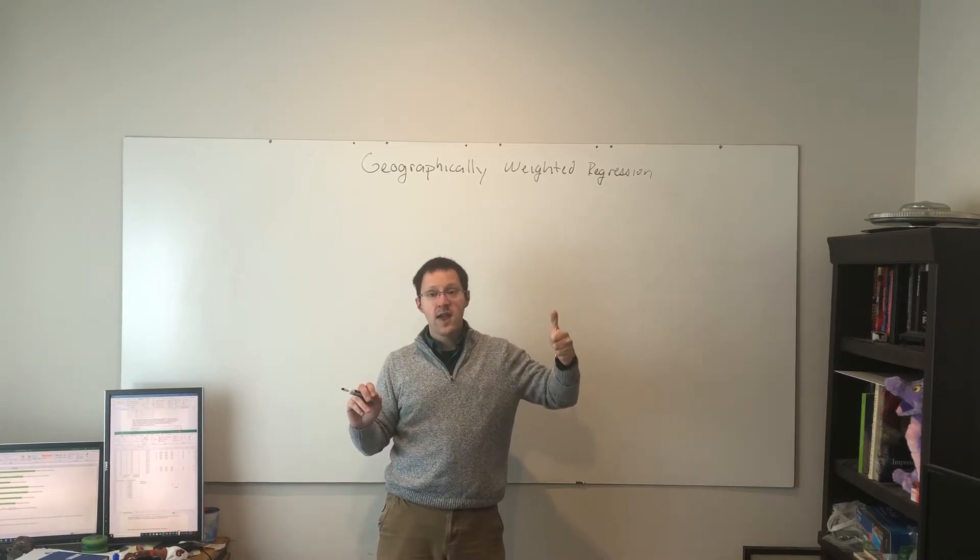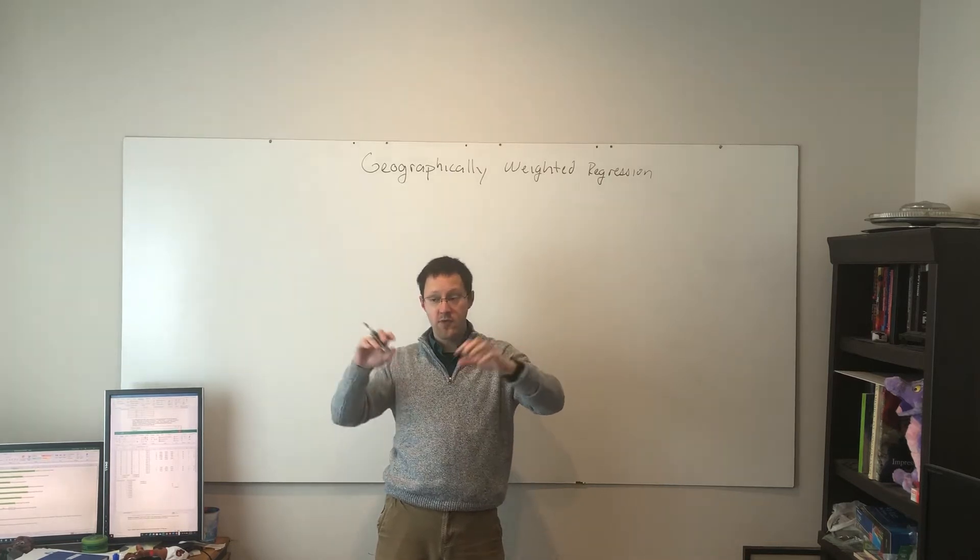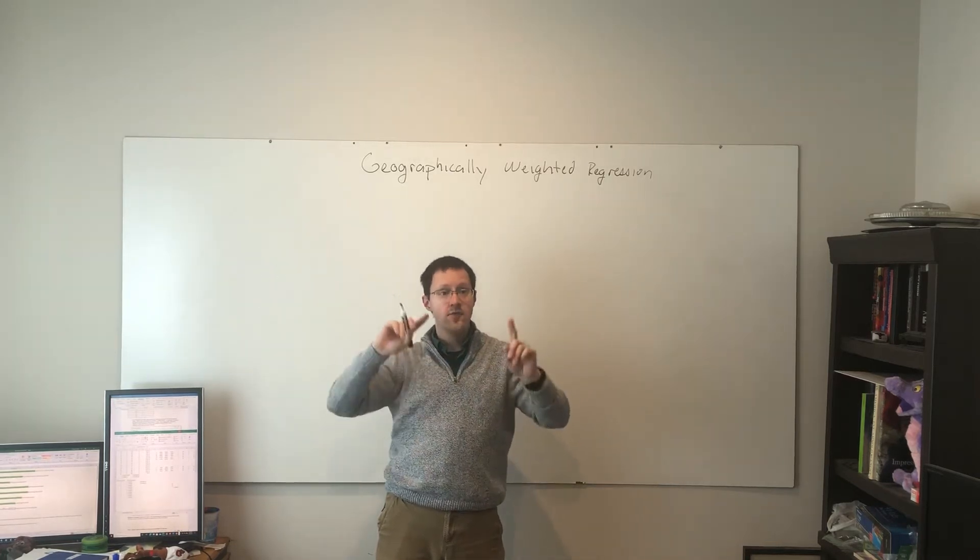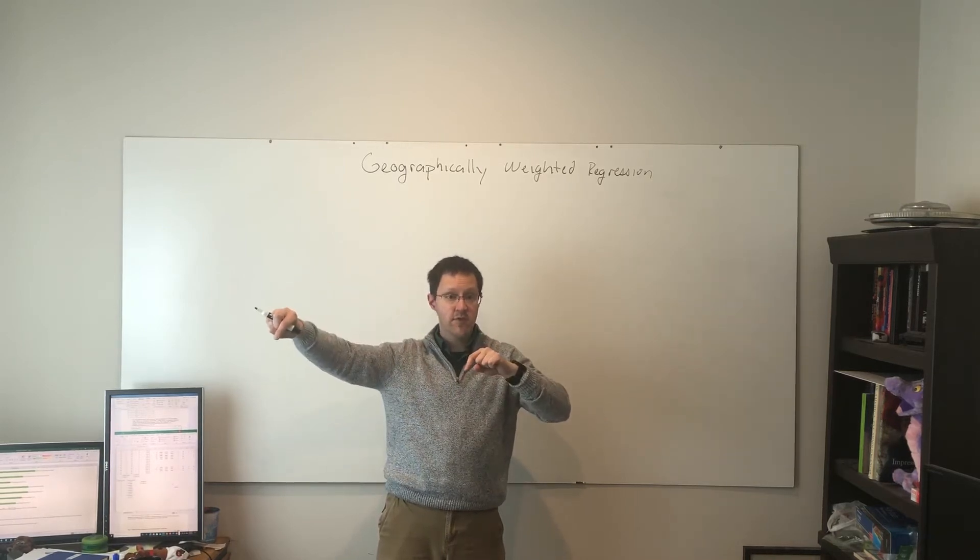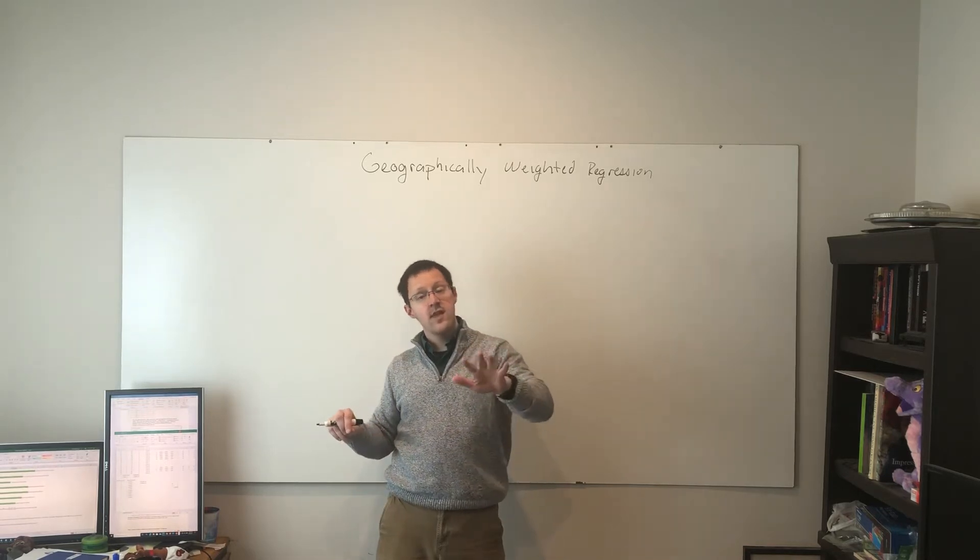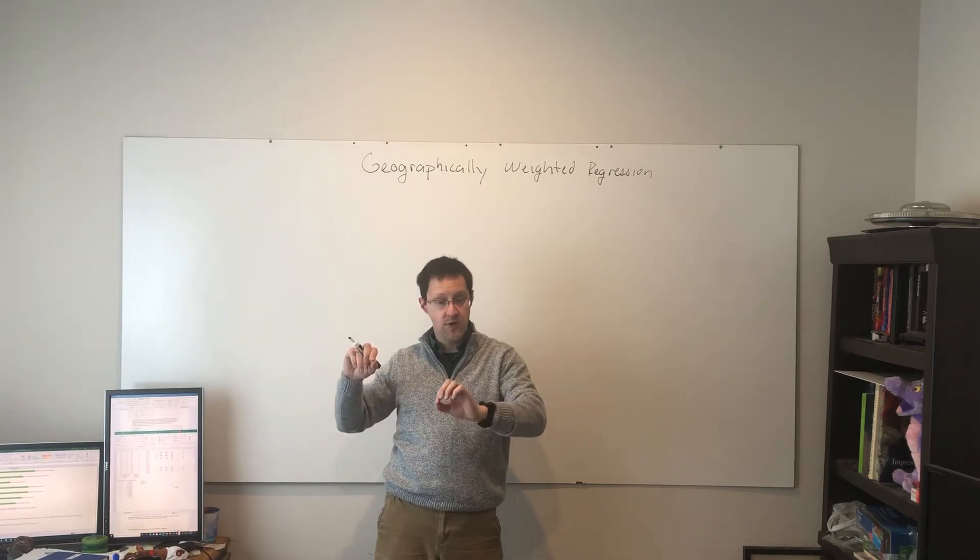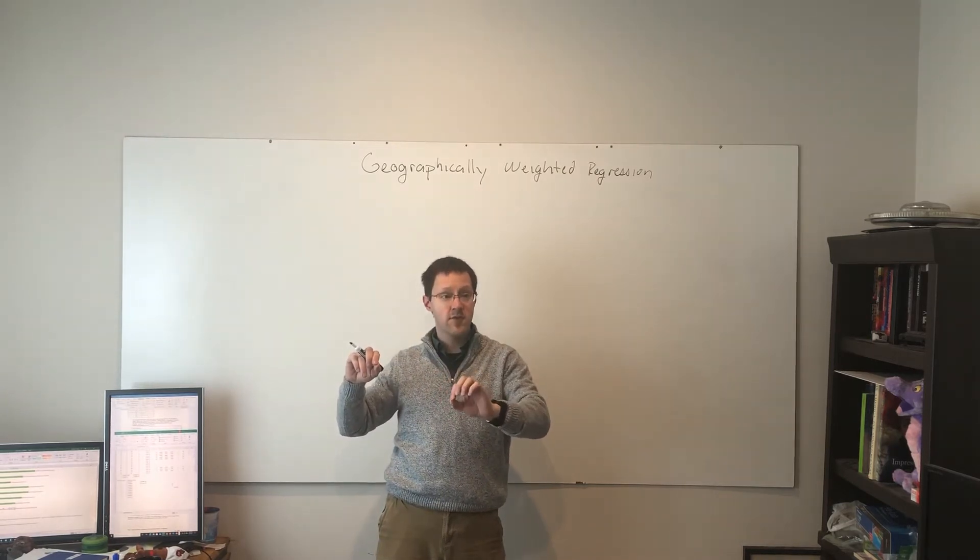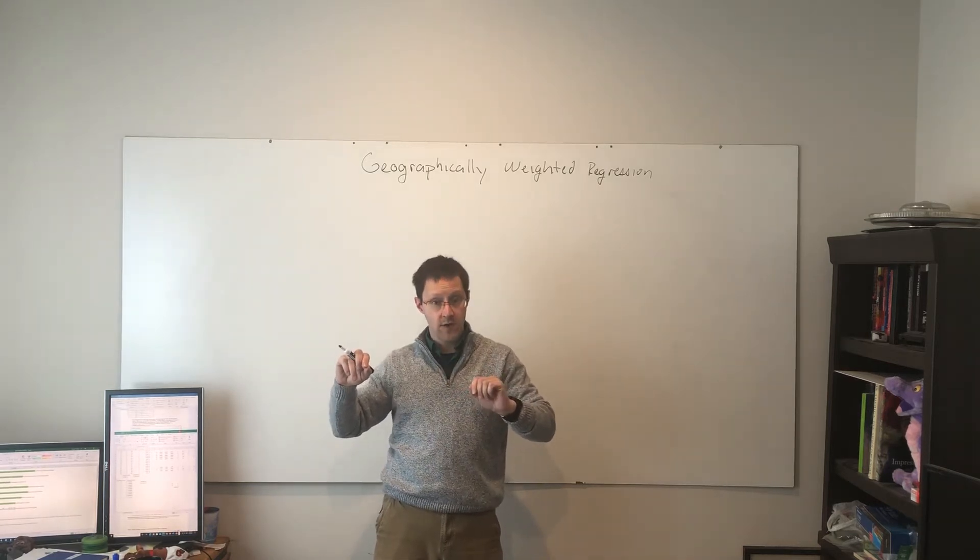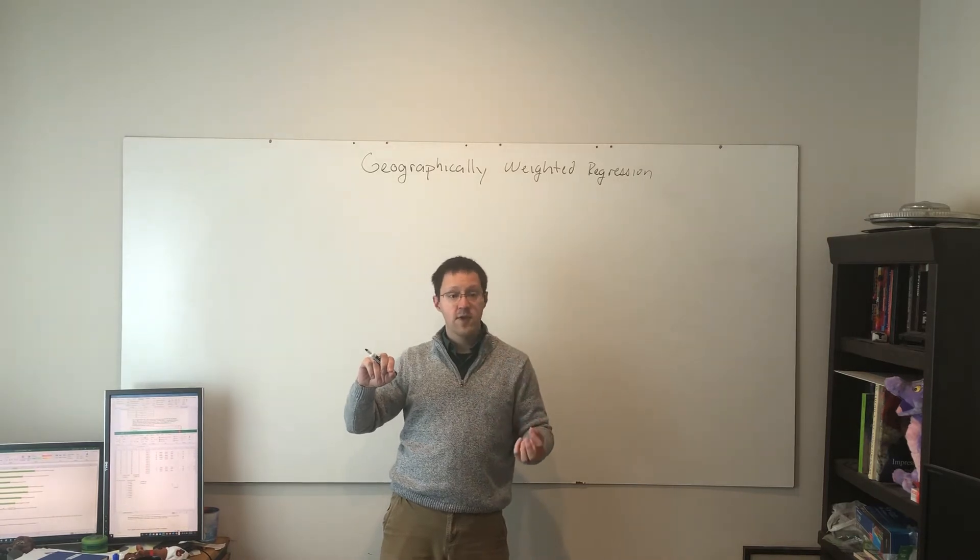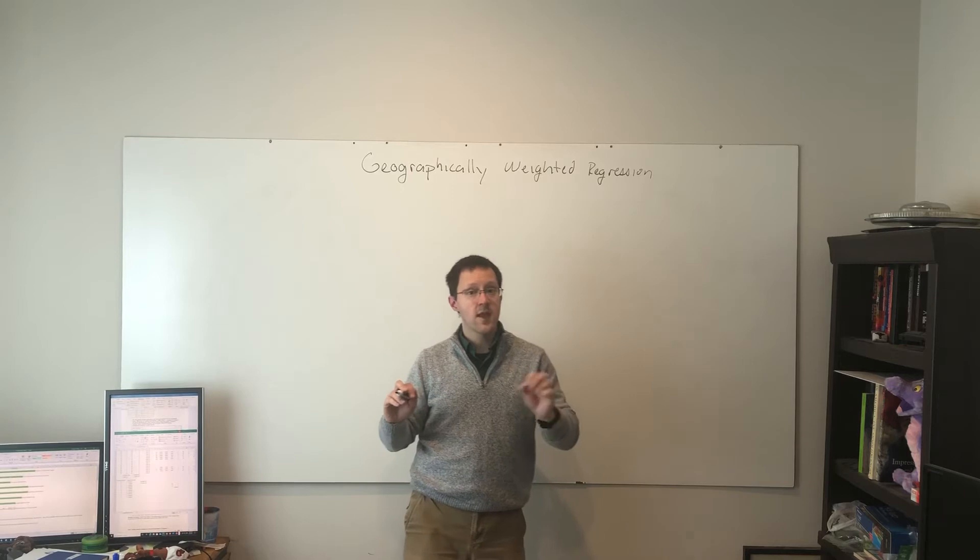If you have a dependency within the dependent variable, so a spillover effect in the dependent variable itself from one place to its neighbors, that's the spatial lag model. If you have a relationship where you think there's some kind of missing factor that's causing those spatially autocorrelated errors, you can go with the spatial error model. And that can be a missing spatial factor even above and beyond everything in a multivariate regression.